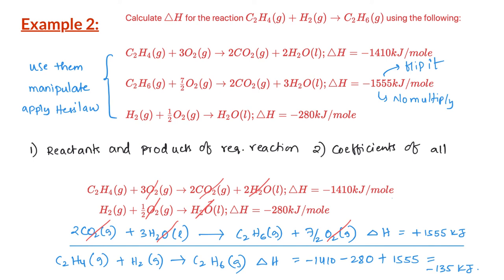The trick here is to keep focusing on the reactants and products of the required reaction and their coefficients. If a particular substance is on the reactant side in the required reaction but on the product side in one of the given reactions, we need to flip that reaction. And if the number of moles of a particular substance in the required reaction is more, then multiply the given reaction by that number.